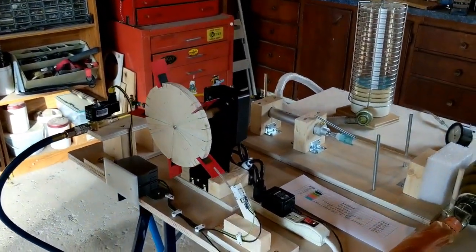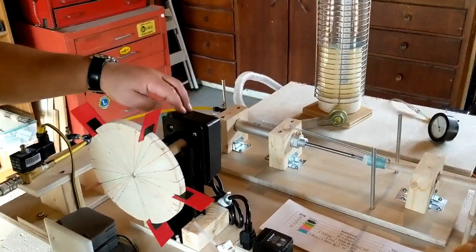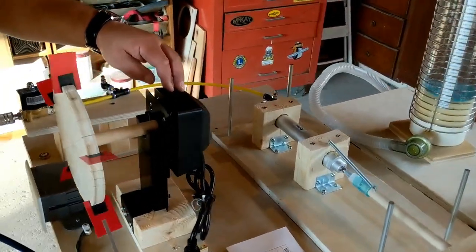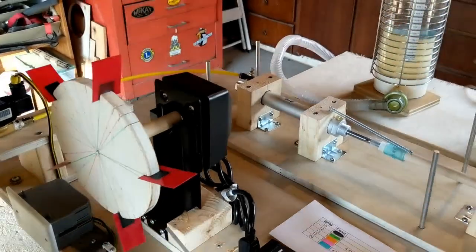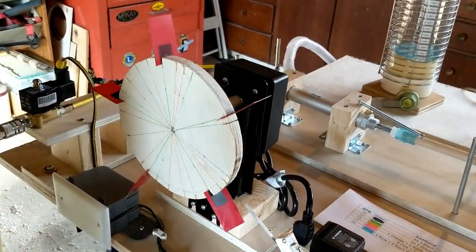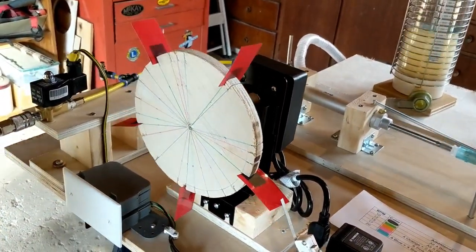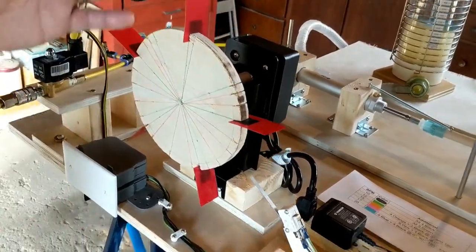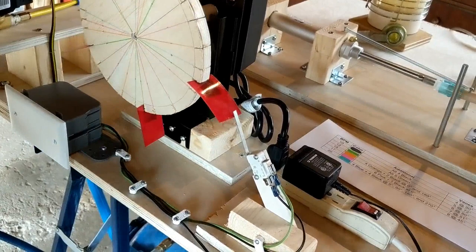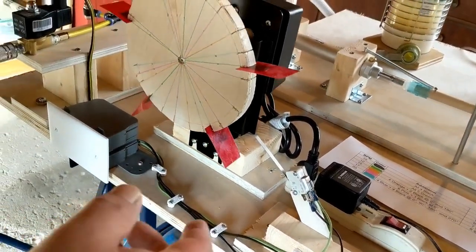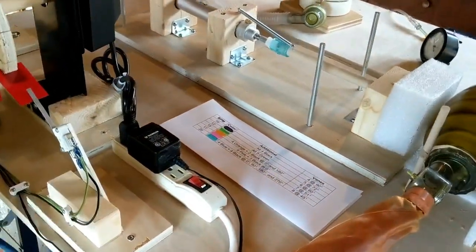So basically the heart of this thing is actually a barbecue rotisserie motor used as a timer. This is from Princess Auto, it was 25 bucks. It does about 2 RPM a minute and from that we developed the idea of having the wheel with slots and these little fins to actuate a switch.